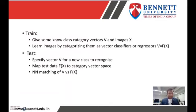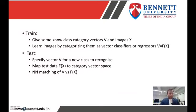In the training phase, we give some known class category vectors V and images X, and learn images by categorizing them as a vector classifier or regressor, where V = F(X). In the testing phase, we specify vector V for a new class to recognize, then map test data F(X) to the category vector space, and finally perform neural network (NN) matching of vectors and F(X).